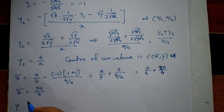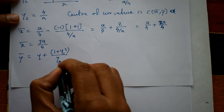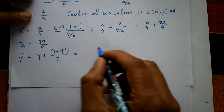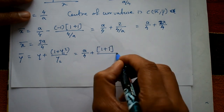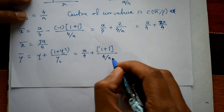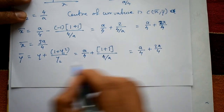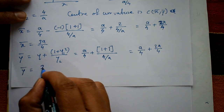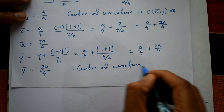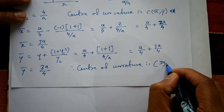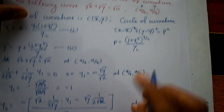Next, ȳ = y + (1 + y1²)/y2. Substituting y = a/4, y1 = −1, and y2 = 4/a: ȳ = a/4 + (1 + 1)/(4/a) = a/4 + 2 × (a/4) = a/4 + 2a/4 = 3a/4. Therefore, the centre of curvature is (3a/4, 3a/4).